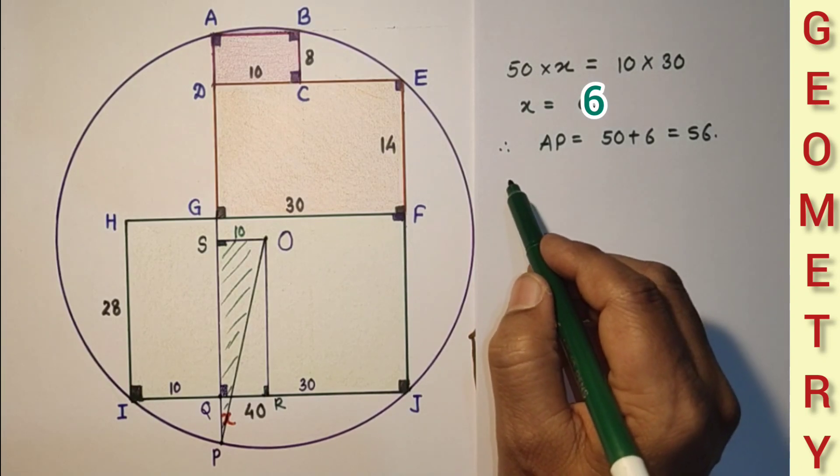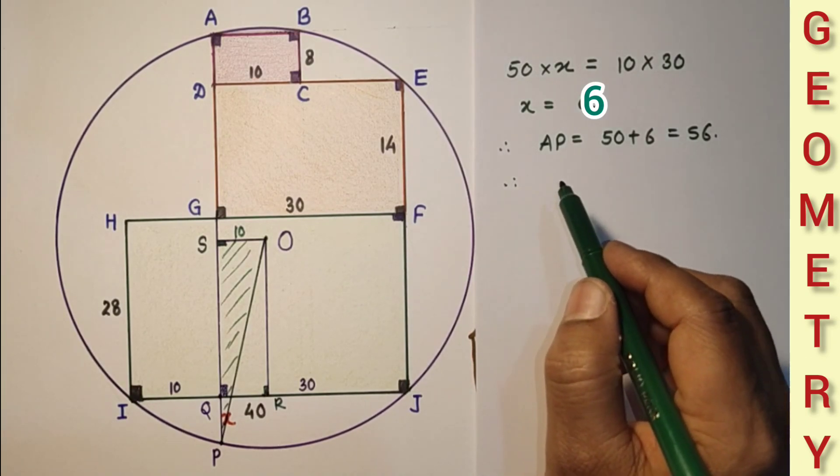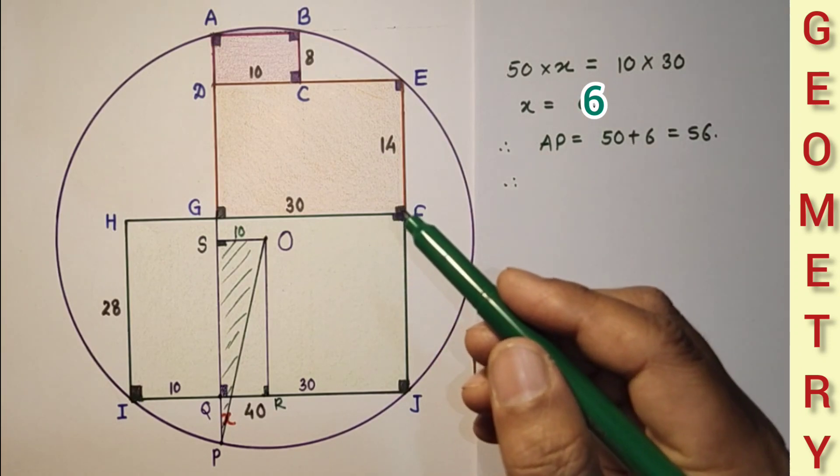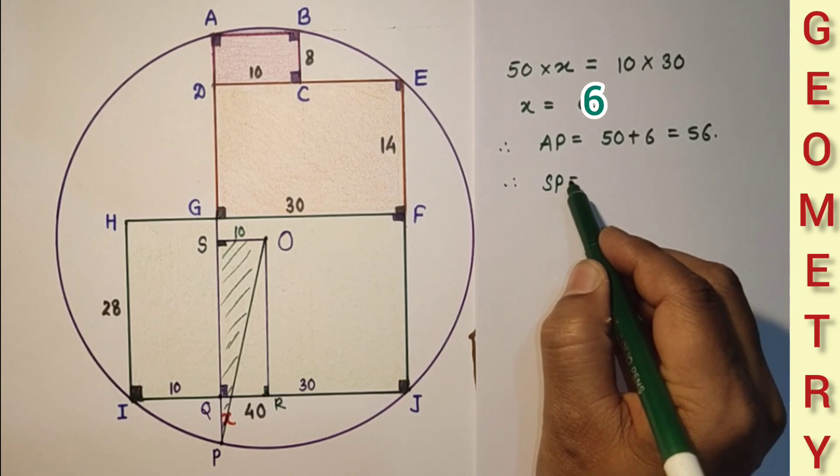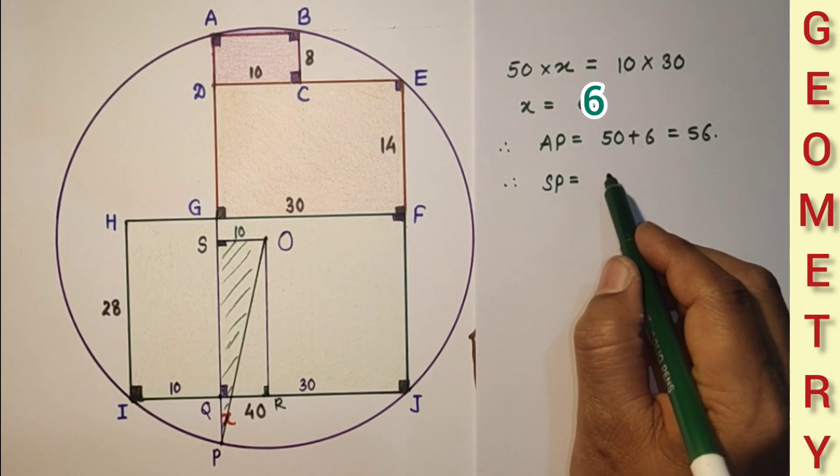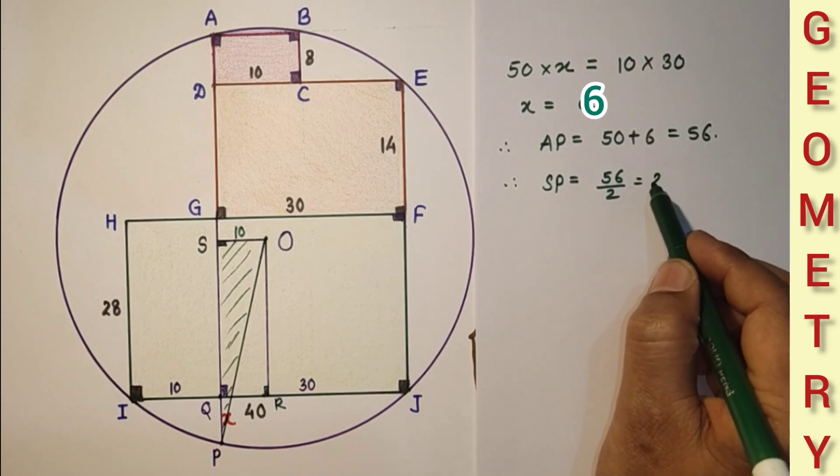And therefore half of AP is equal to SP, and SP is equal to half of 56, that is 28 units.